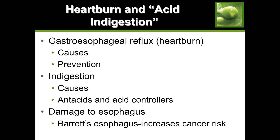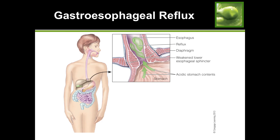If you have acid reflux, it can damage your esophagus. Unlike your stomach, your esophagus doesn't have a mucus lining, so the acid going up your esophagus starts damaging it. This can lead to Barrett's esophagus, which increases your cancer risk. Cancer of the esophagus is very serious. The weak lower esophageal sphincters stay open between meals, allowing stomach acid to go up and irritate your esophagus.